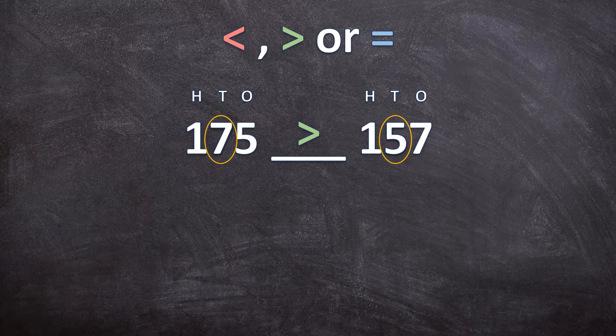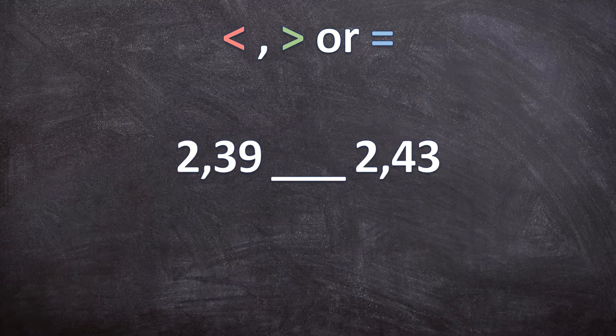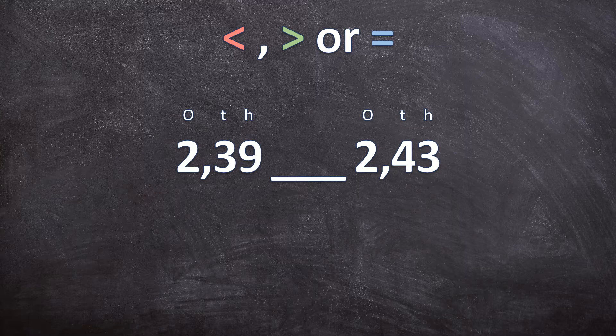Let's use this same concept with decimal numbers. Here is our first example: we have 2,39 and 2,43. We're going to use our place values, starting from the highest to the lowest, to determine which of these decimal numbers is the highest.